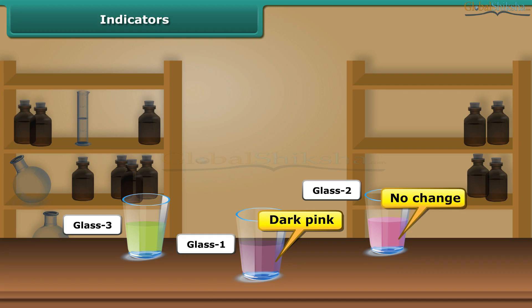There is no color change in glass two. This is because water is neutral in nature. The color in the third glass changes to green. We can conclude that the indicator solution obtained from china rose turns bright pink in the presence of an acid and green in the presence of a base. We can put a drop of this indicator solution in a desired food item to know whether it is acidic or basic.